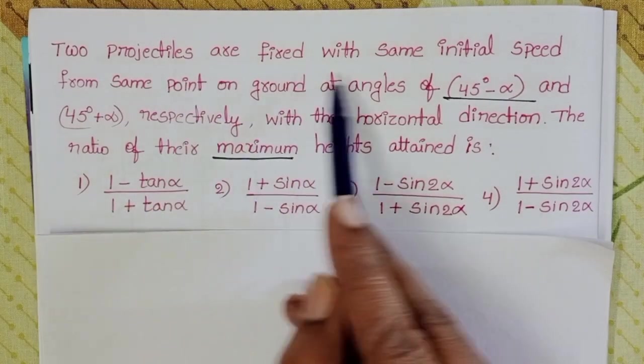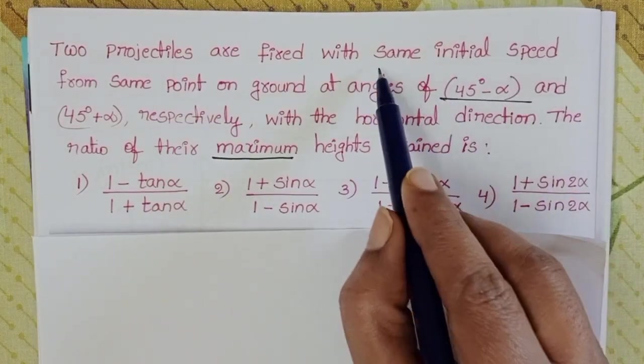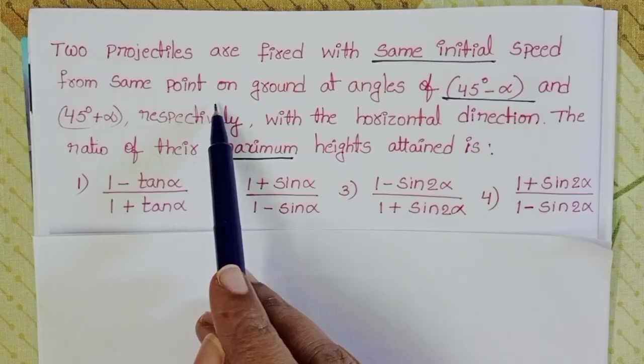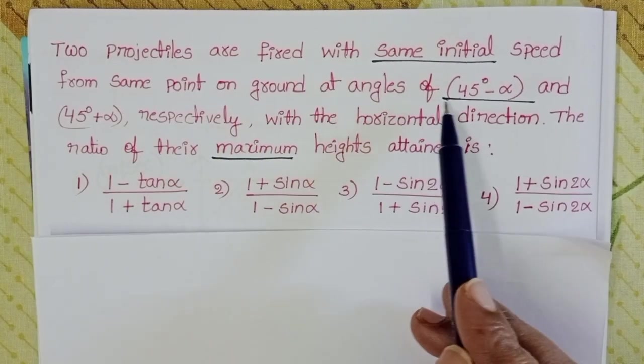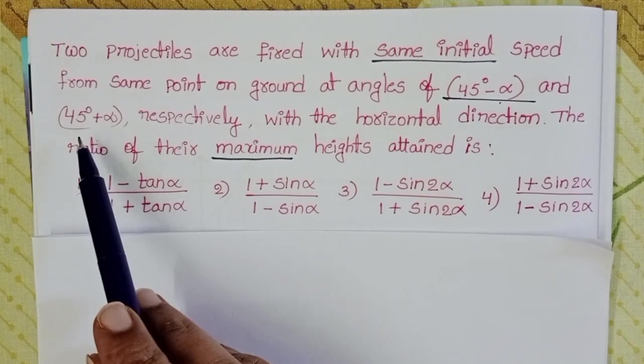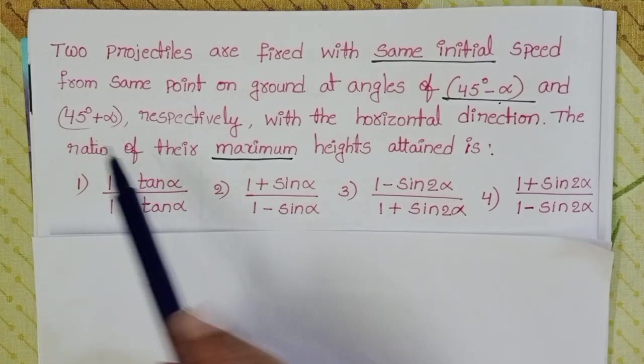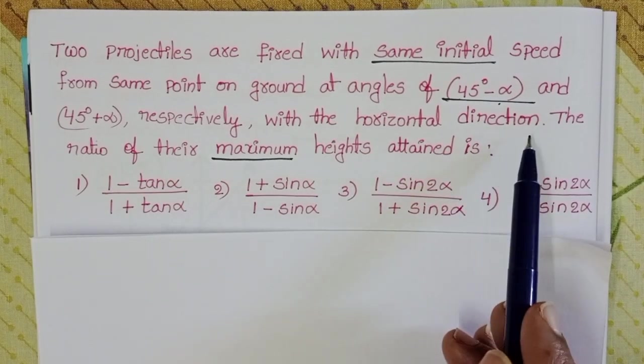Two projectiles are fired with same initial speed from the same point on the ground at angles of 45 degrees minus alpha and 45 degrees plus alpha with the horizontal direction.